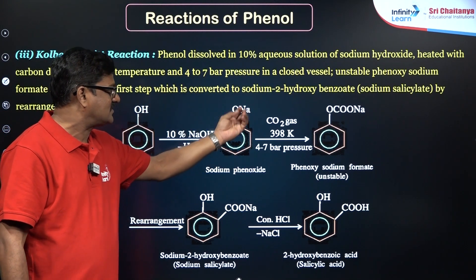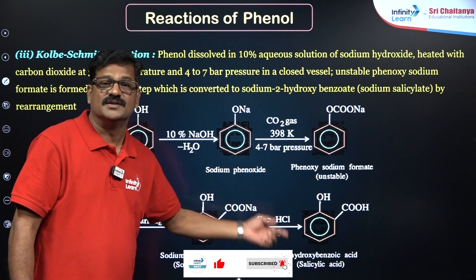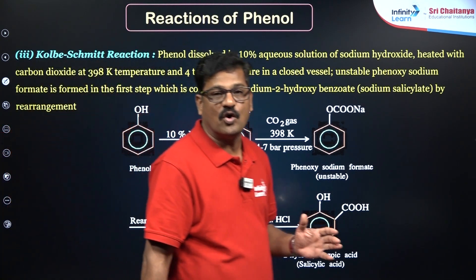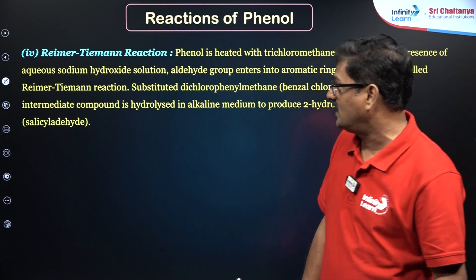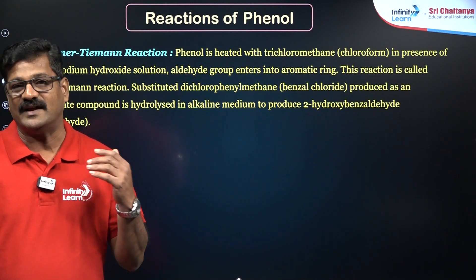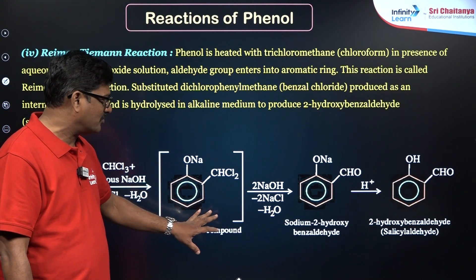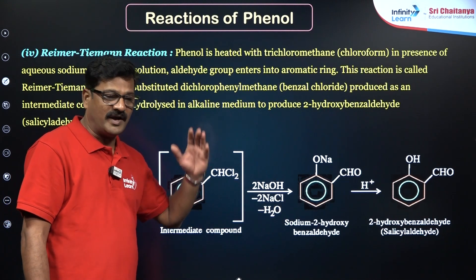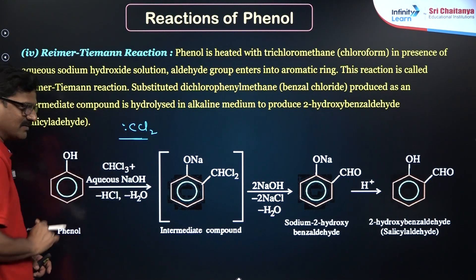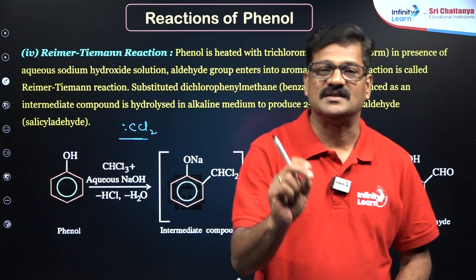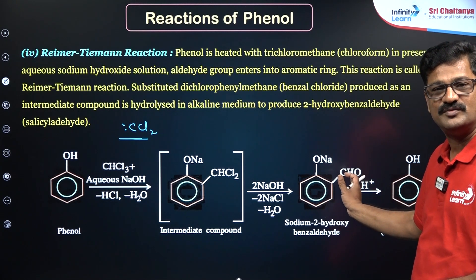Kolbe's reaction: phenol reacts with sodium hydroxide to give sodium phenoxide, which attacks carbon dioxide to give salicylic acid (2-hydroxybenzoic acid) after rearrangement. Reimer-Tiemann reaction: phenol treated with chloroform in sodium hydroxide gives an intermediate that is hydrolyzed to give salicylaldehyde. In the Reimer-Tiemann reaction, CCl₂ (dichlorocarbene) is the attacking species — this is an important detail for NEET examination.